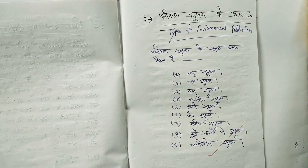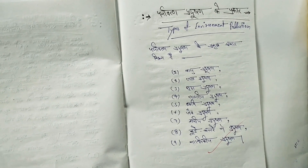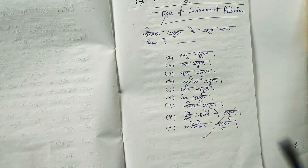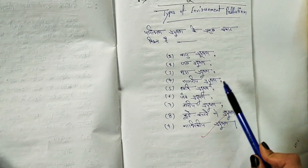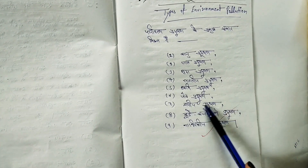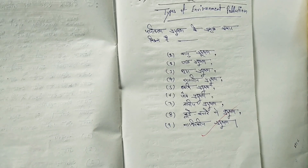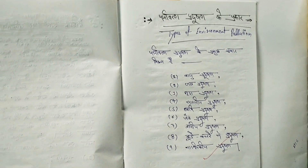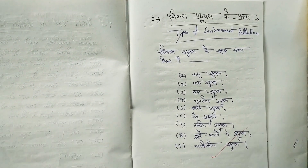Next is paryavaran pradushan ke prakar — types of environmental pollution. As even young children know, the types include: vayu pradushan (air), jal pradushan (water), mrid pradushan (soil), saagariya pradushan (marine), dhvani pradushan (noise), jay pradushan, tapio/kode/kachre se pradushan, and nabhikiya pradushan (nuclear pollution). You can take a screenshot if needed.